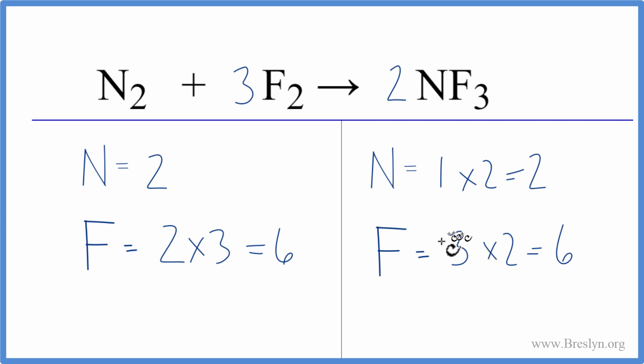The trick here, if you do have an odd number, if you can get it to an even number, that often helps balancing equations. This is Dr. B with the balanced equation for N2 plus F2 yields NF3. Thanks for watching.